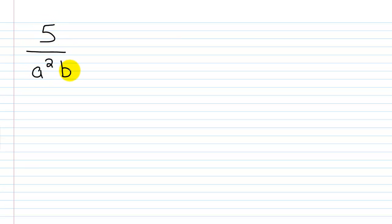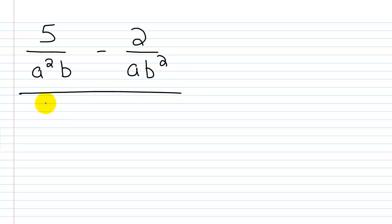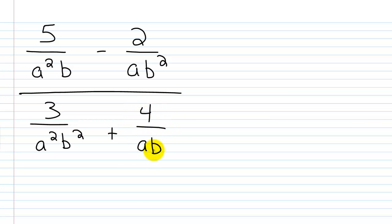Let's continue looking at some problems. We're going to use the first method where we simplify the numerator and denominator separately, and then perform our main division. So let's look at 5 over a²b minus 2 over ab², all over 3 over a²b² plus 4 over ab. This problem will be a little tedious because we need to get some common denominators in each case.